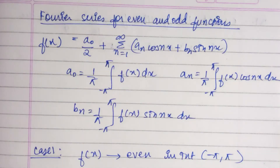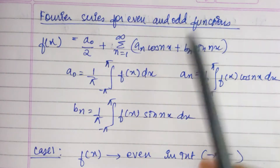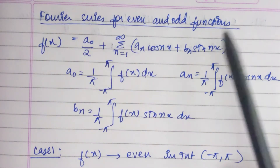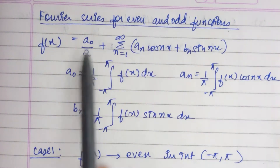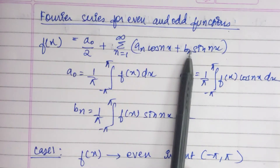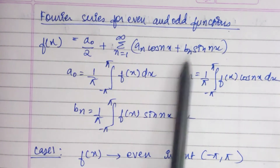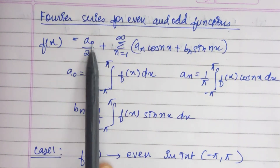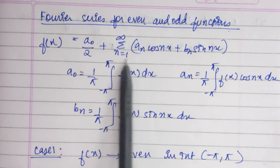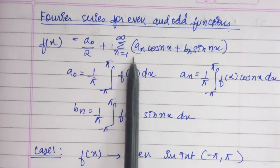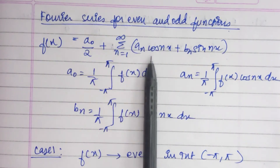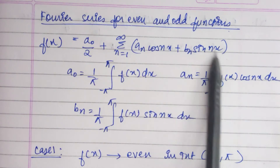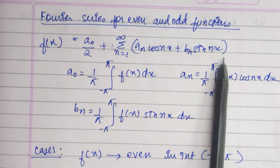Now coming to the main part — the Fourier series for even and odd functions. This is our normal formula: f of x equals a naught by 2 plus summation from n equals 1 to infinity of a n cos nx plus b n sin nx.